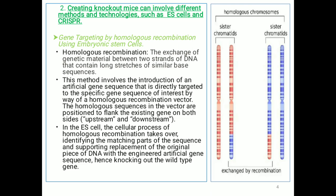What is homologous recombination? It is the exchange of genetic material between two strands of DNA that contain long stretches of similar base sequence. In this gene targeting method, we are introducing an artificial gene sequence that is directly targeted to the specific gene sequence that we are going to knockout, with the help of a homologous recombination vector.